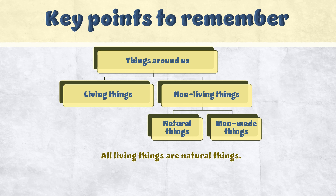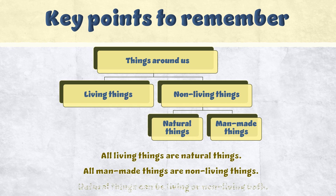The key points to remember are: all living things are natural things; all man-made things are non-living things; and natural things can be both living, like a plant, or non-living, like a mountain.